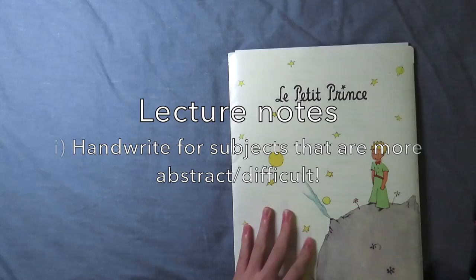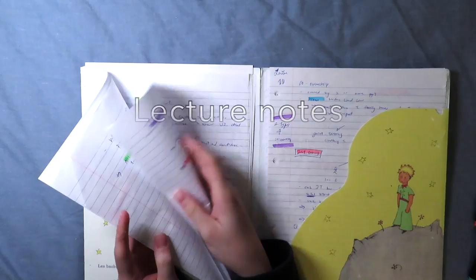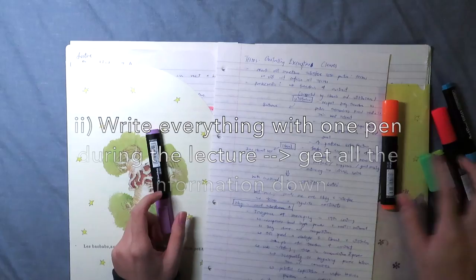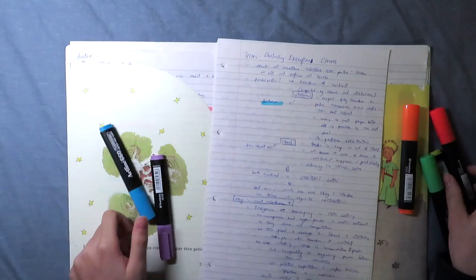What I do during the lecture is I'll write all of my notes with one pen because there really isn't enough time for you to switch around and use different colors during the lecture. So just stick with one pen and scribble. But the most important part of lecture notes is you actually have to ultimately understand what you wrote during the lecture.